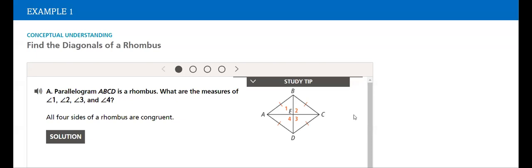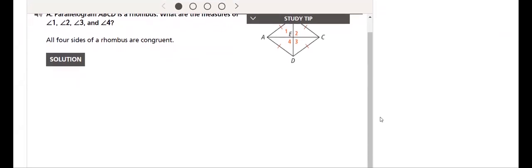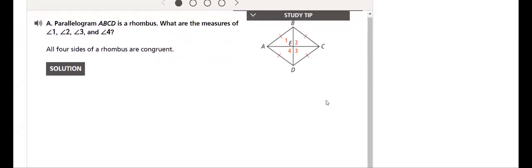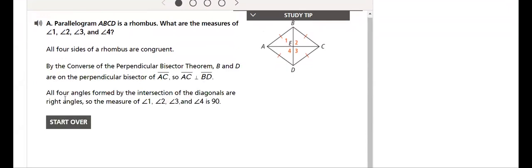We will start with Example 1, which is about conceptual understanding: find the diagonals of a rhombus. We'll see how it is solved in detail, how to find the measures of these angles. We'll solve them in detail, and then we have many other examples.